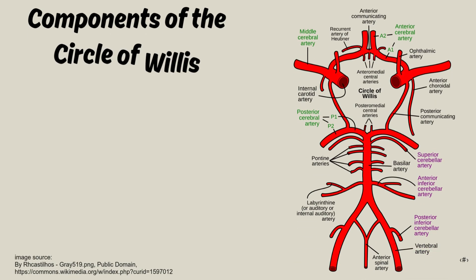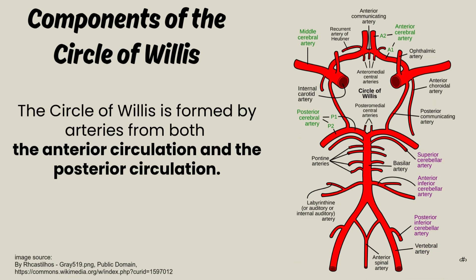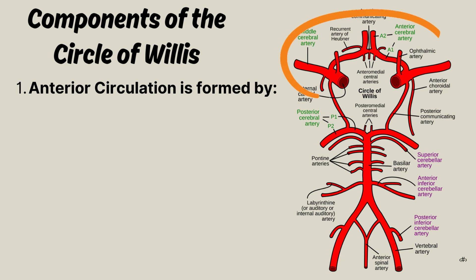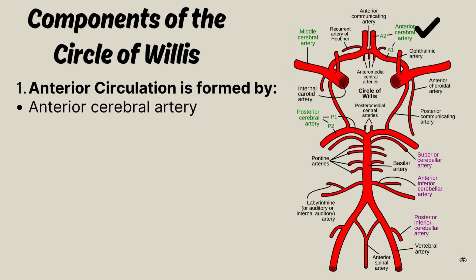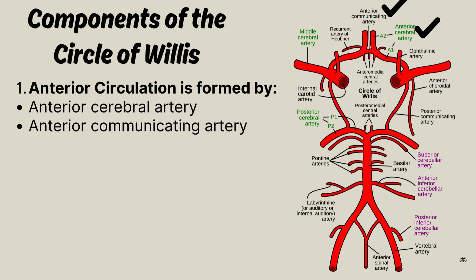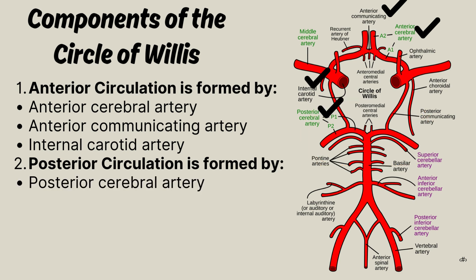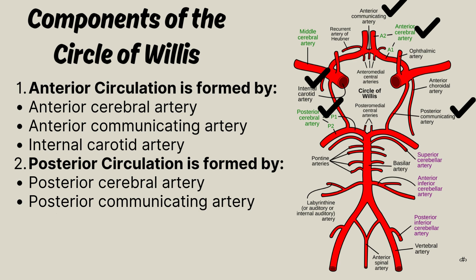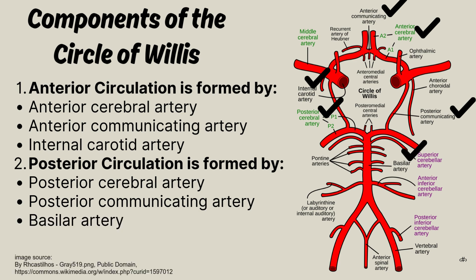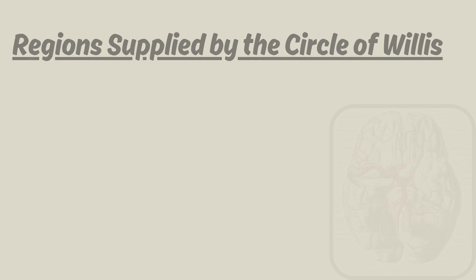The Circle of Willis is formed by arteries from both the anterior circulation and the posterior circulation. The anterior circulation is formed by the anterior cerebral artery, anterior communicating artery, and internal carotid artery. The posterior circulation is formed by the posterior cerebral artery, posterior communicating artery, and basilar artery.